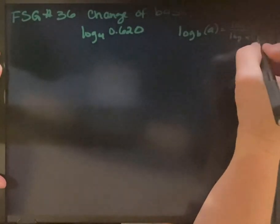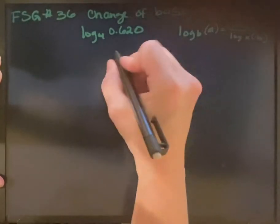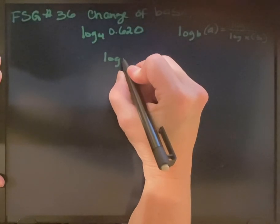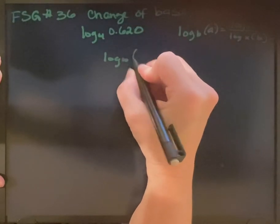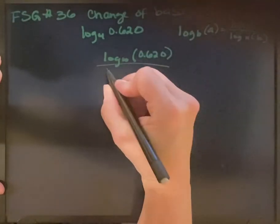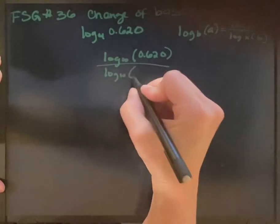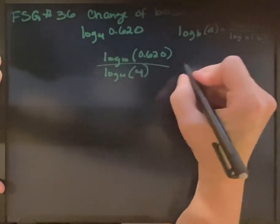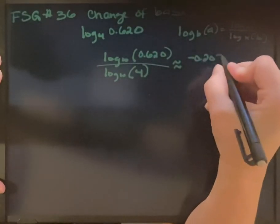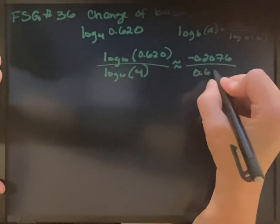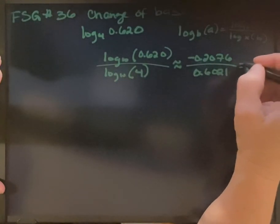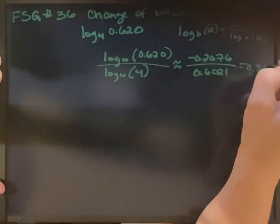So that means we've got log base 10 of 0.620 over log base 10 of 4, which is approximately equal to negative 0.2076 over 0.6021, which equals negative 0.3448.